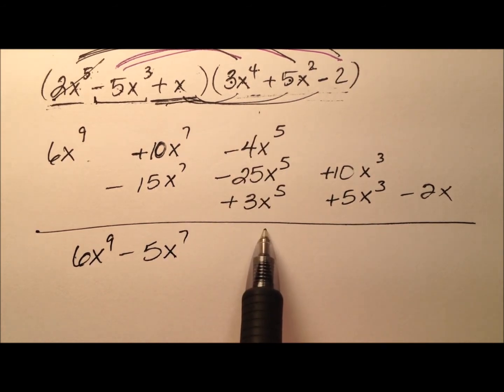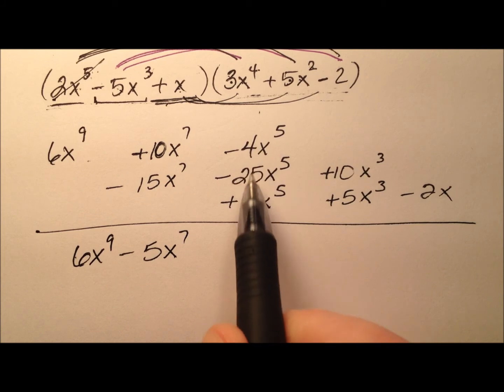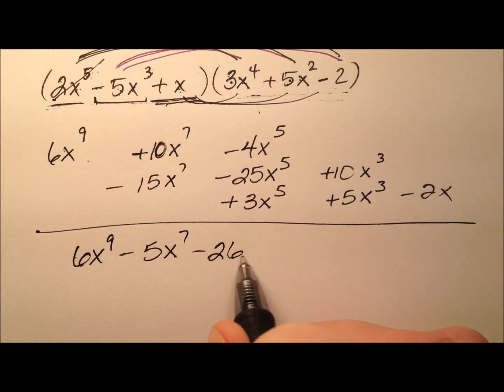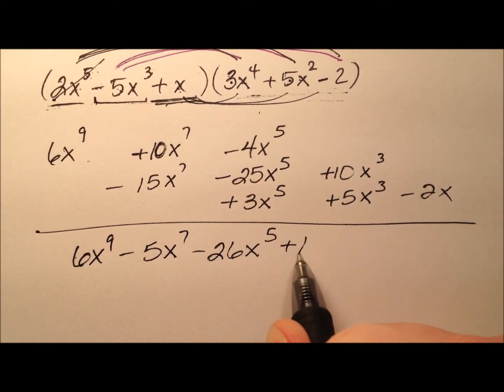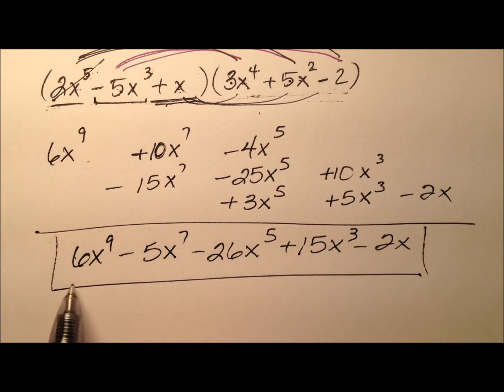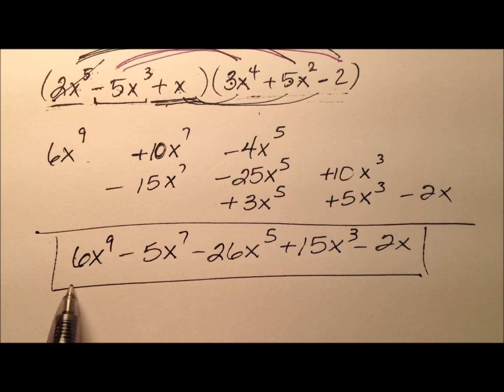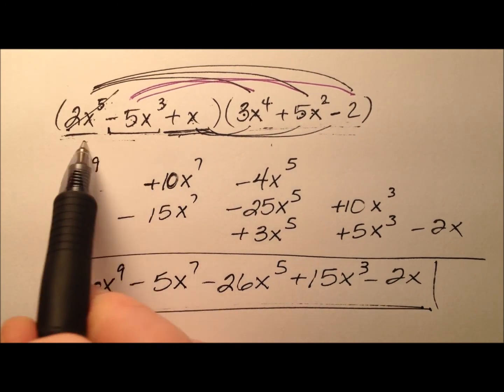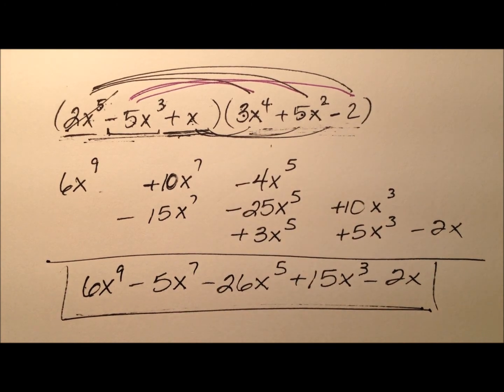and then all these x to the fifth terms are going to add together, and we have, what, negative 26x to the fifth plus 15x cubed and minus 2x. And we have this nonic polynomial with five terms, and that serves as the product for these two trinomials.